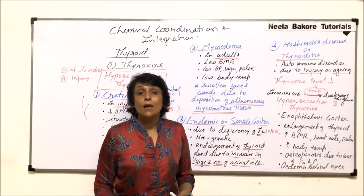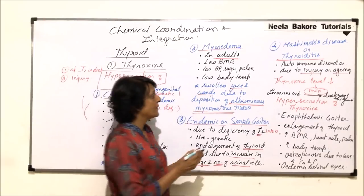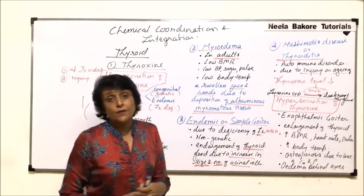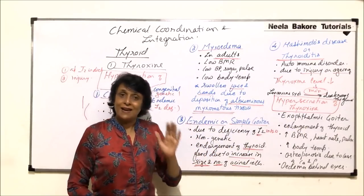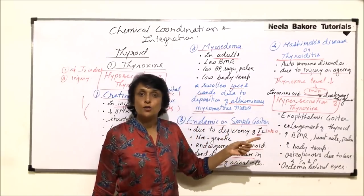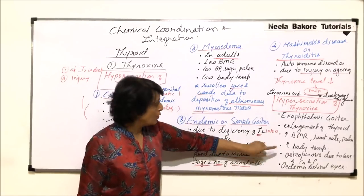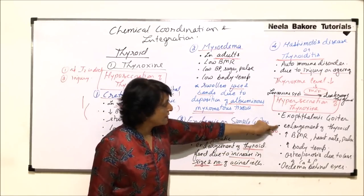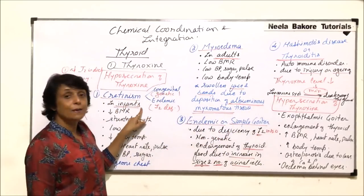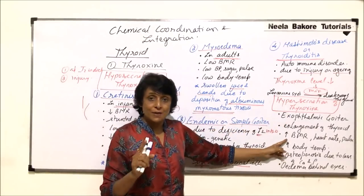These are all hypo conditions when the hormone production is less. Now we would take up the hyper condition. If the hormone is more than normal, we can identify these things based on the functions — it regulates BMR, temperature, and all those things. In hypo condition there was low BMR; in hyper condition there is high BMR.